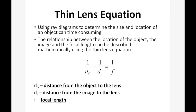The thin lens equation. Using ray diagrams to determine the size and location of an object can be time consuming. The relationship between the location of the object, the image, and the focal length can be described mathematically using the thin lens equation. DO is the distance from the object to the lens, DI is the distance from the image to the lens, and F is the focal length.